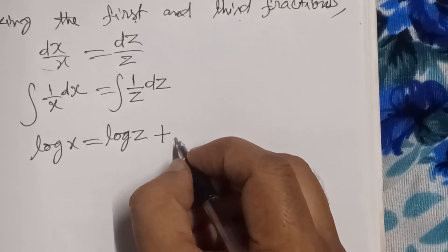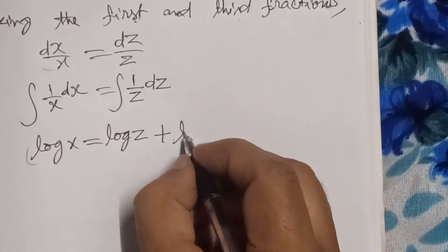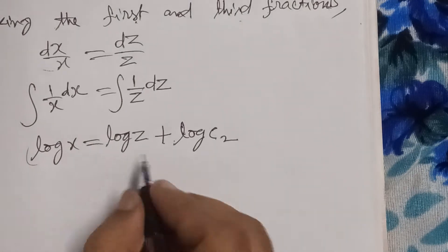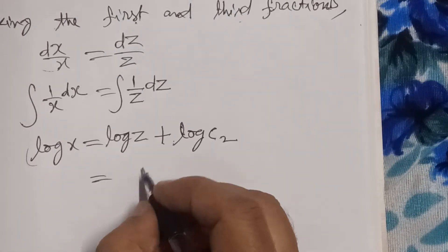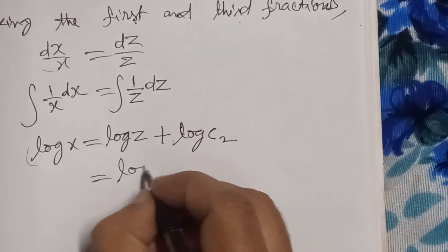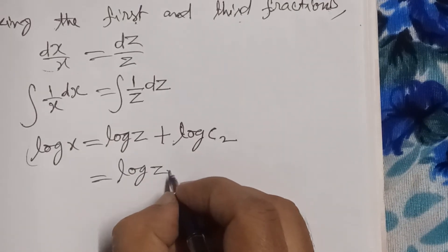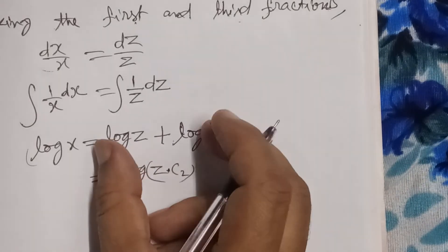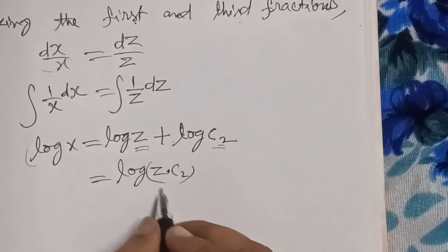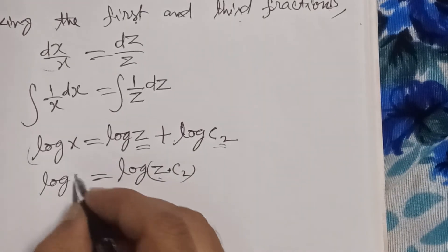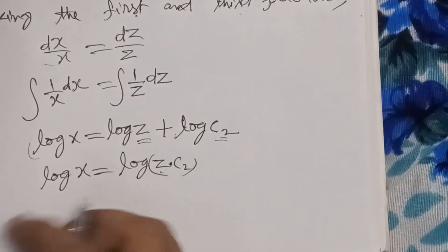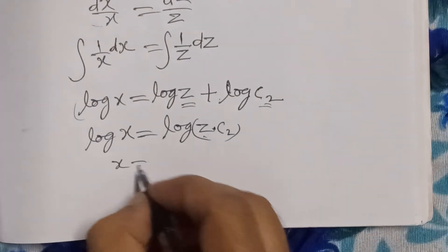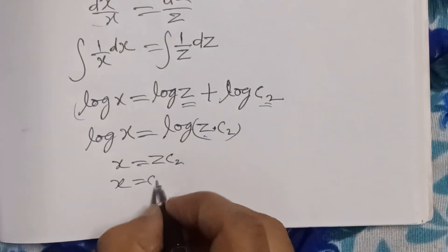The constant should be in the form of log, so log c2. We can write the right-hand side as log(z·c2), because when two logs are present with a plus sign and we combine them, they multiply. Removing log by taking antilog on both sides, we get x = z·c2, or x = c2·z.